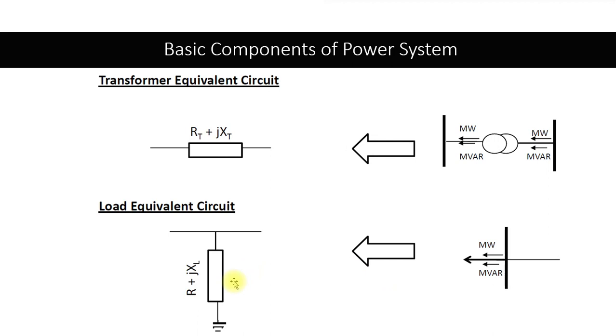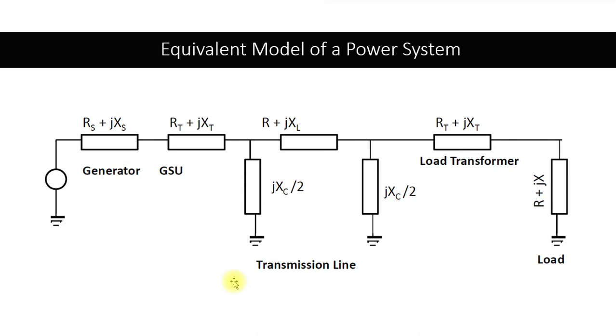Now, in order to run or solve this electrical power system, we can connect each of these equipment. The same power system which we showed in the previous slide, starting from generation, step-up transformer, to transmission line, to step-down transformer, all the way to load, is modeled through this equivalent network. Now we have a simple electrical network in the form of resistance and reactance. It is easy to solve this network through any software or through mathematical equations we know. This is how we solve an electrical power system. I hope you understood this lecture.